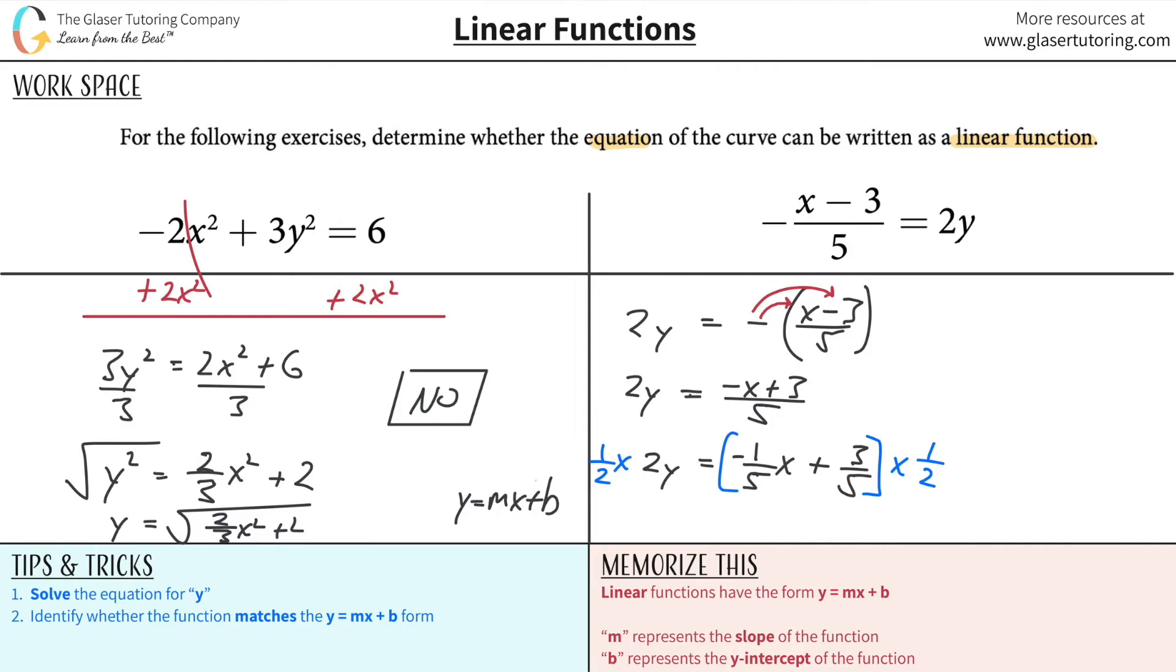Now what's going to happen is this half basically cancels with that 2, so I'm left with y. And now when I take a half and I distribute it now to each of the two terms in here, what are we going to get? Well we're going to get, when you take 1 half and multiply it by negative 1 fifth, it's going to be negative 1 tenth.